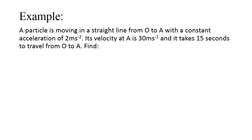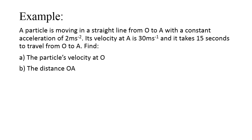Let us move to examples. The first question: a particle is moving in a straight line from O to A with a constant acceleration of 2 metres per second squared. Its velocity at A is 30 metres per second and it takes 15 seconds to travel from O to A. Find (A) the particle's velocity at O, and (B) the distance OA. Let us start with Part A first. Analysing the question: acceleration is 2 metres per second squared, final velocity V at A is 30 metres per second, and the time taken is 15 seconds. They ask for the velocity at O, which is the initial velocity.